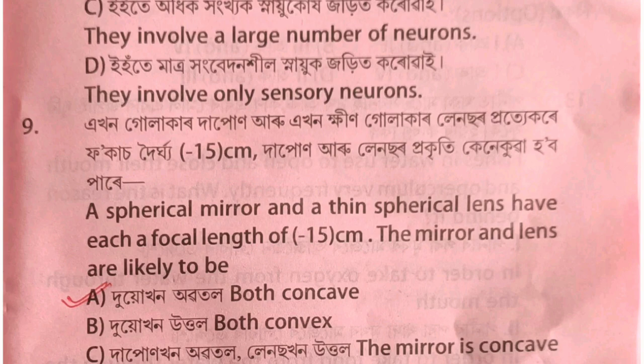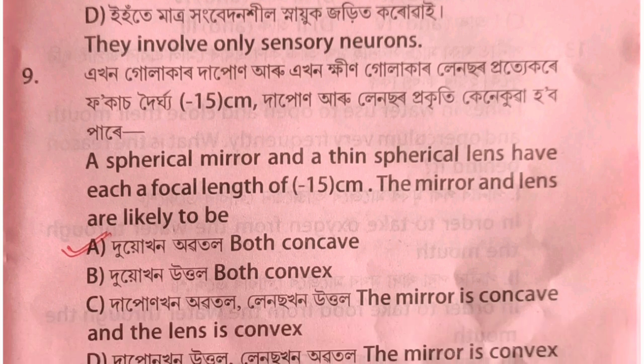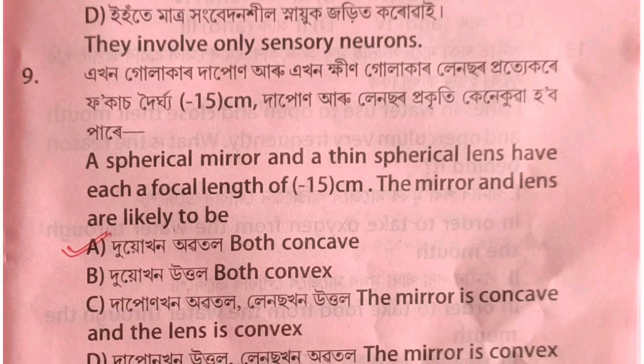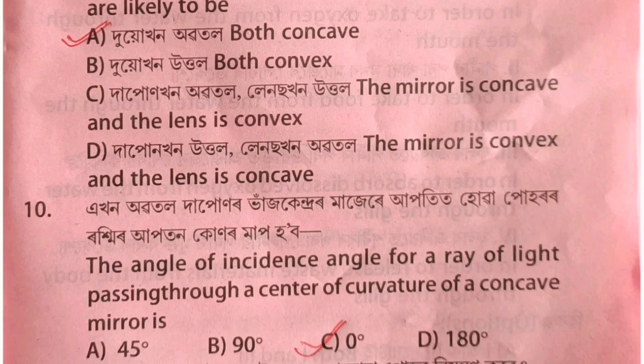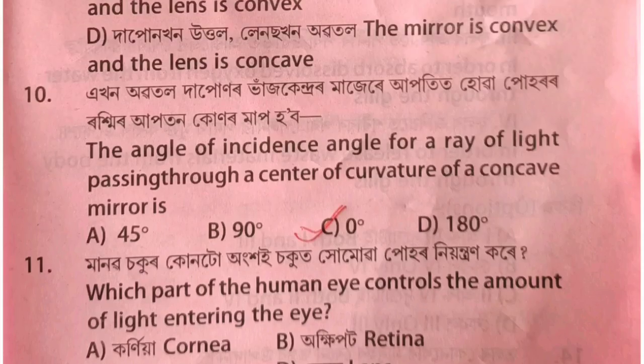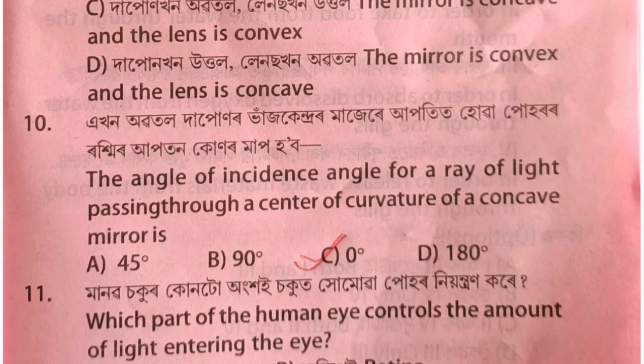A lens with focal length minus 15 cm is discussed. This is a concave lens. The swap of focus because it is minus — to complete the question about the lens and the bottle or arrow, option is discussed. The question will be covered at 0 degrees in a future video.